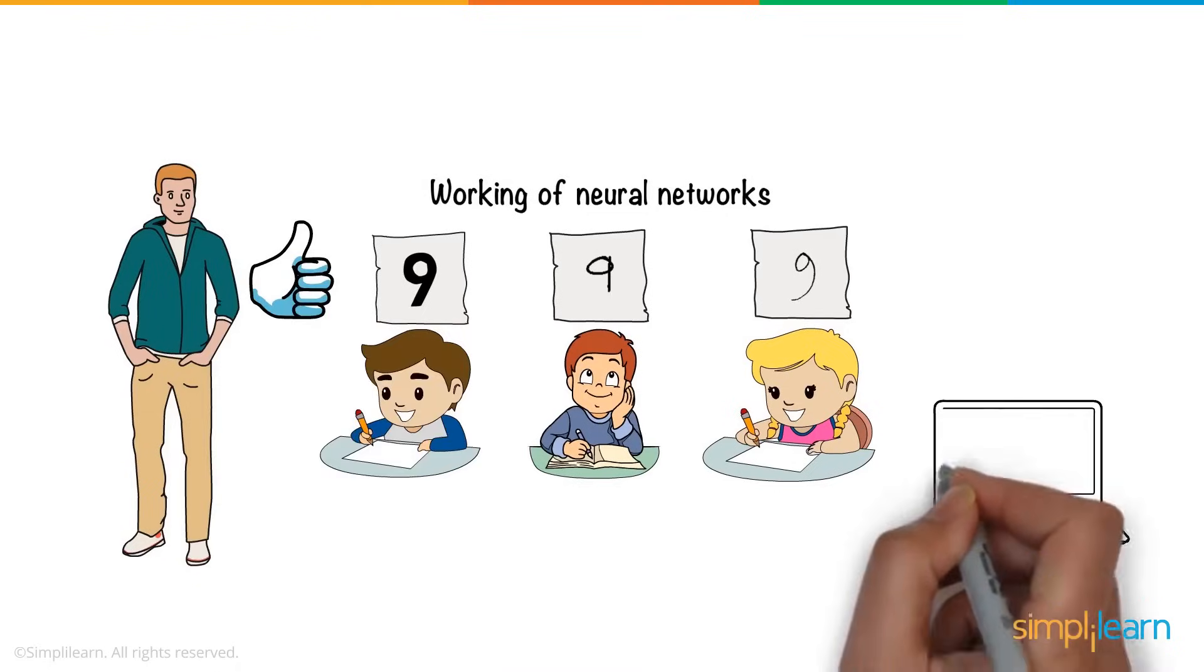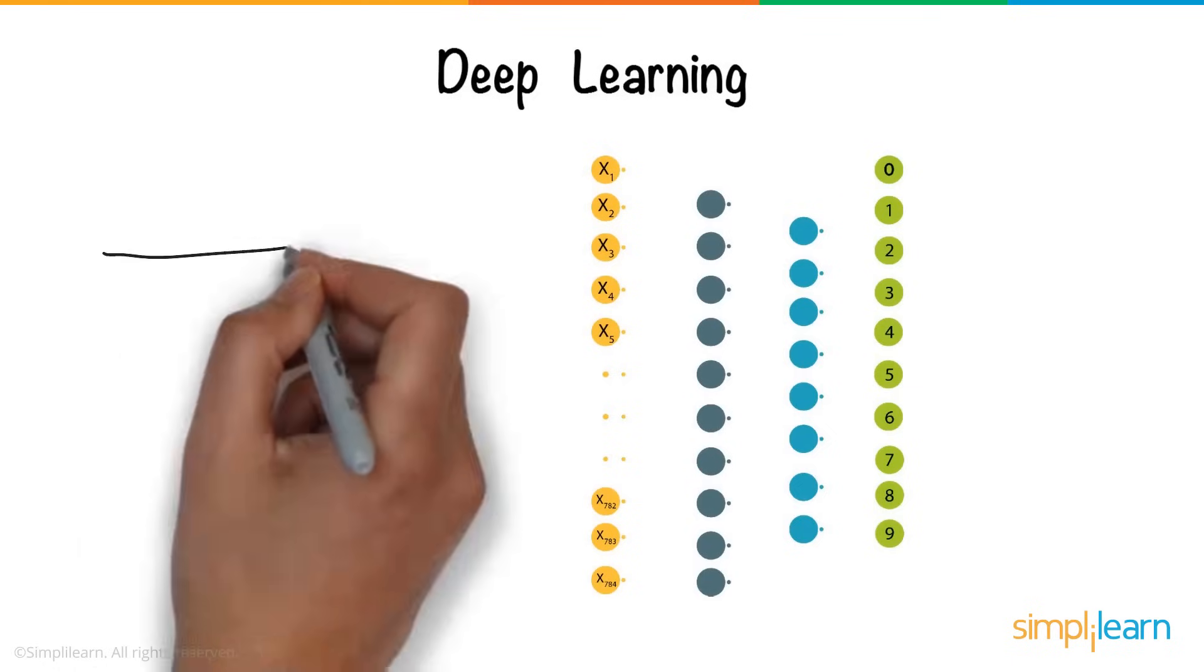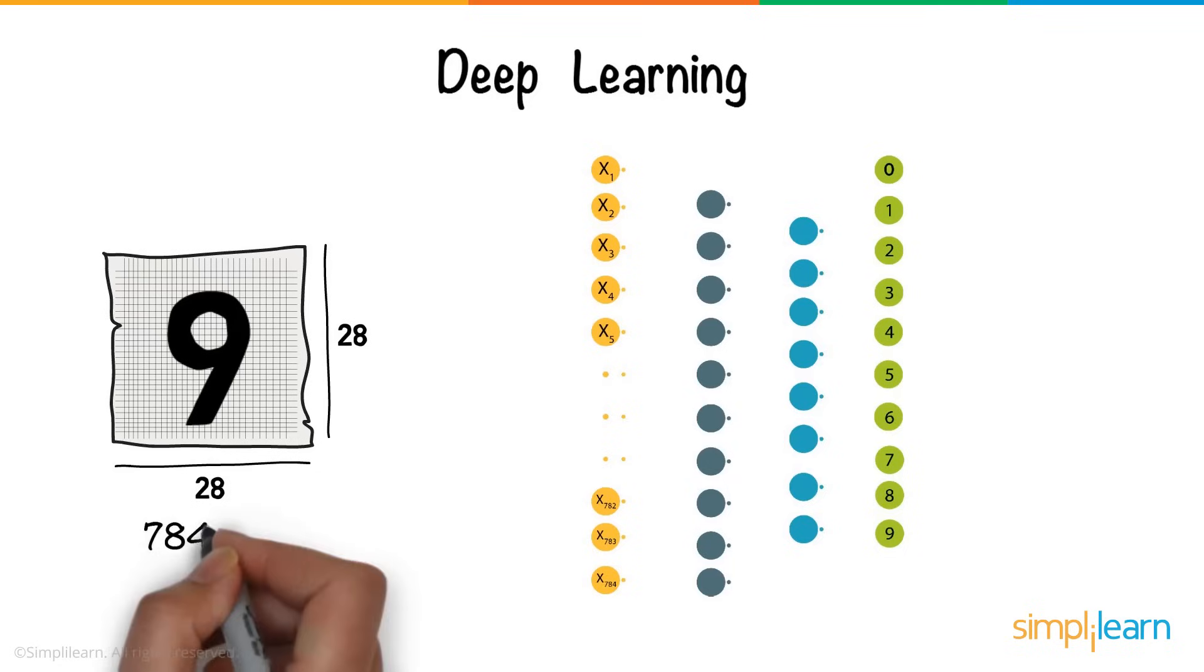But what if a computer had to recognize them? That's where deep learning comes in. Here's a neural network trained to identify handwritten digits. Each number is present as an image of 28 times 28 pixels. Now, that amounts to a total of 784 pixels.